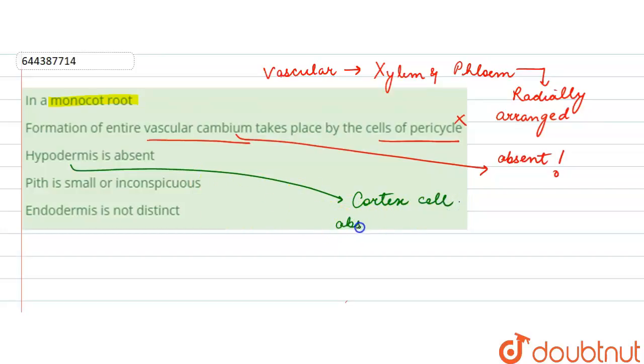The third one says pith is small or inconspicuous. Pith in monocot roots is large and well developed, so this will be wrong.